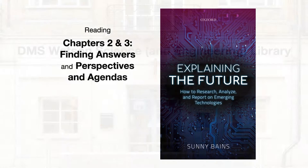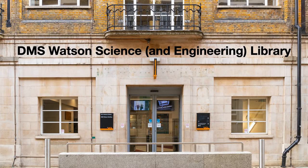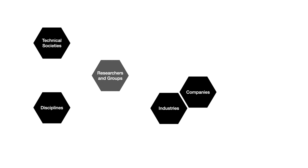Let's start in the two places that you're most used to looking for information: in the library and on the free web. By free, I mean literally not restricted by a paywall or by a corporate barrier. You can think of several different types of entity that generate information that you will need. Researchers and groups are likely the most important, but the activities of companies and technical societies and trends or practices in industries and disciplines may also be useful to follow.